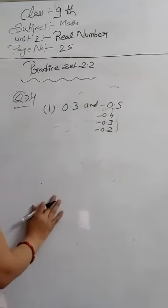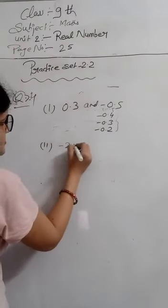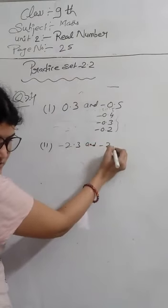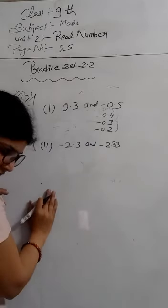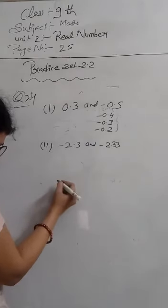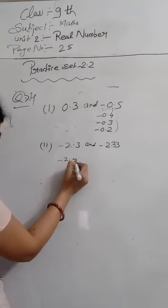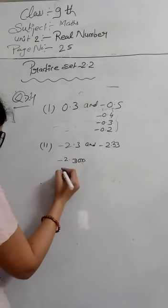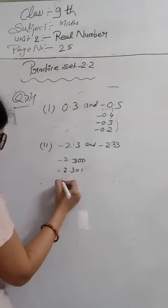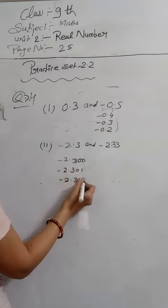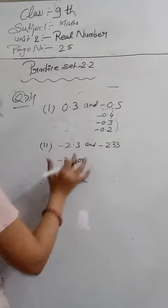So we write: -0.4, -0.3, -0.2. These are rational numbers between -0.5 and 0.3. We can also write -2.301, -2.302 as further examples of rational numbers in between.